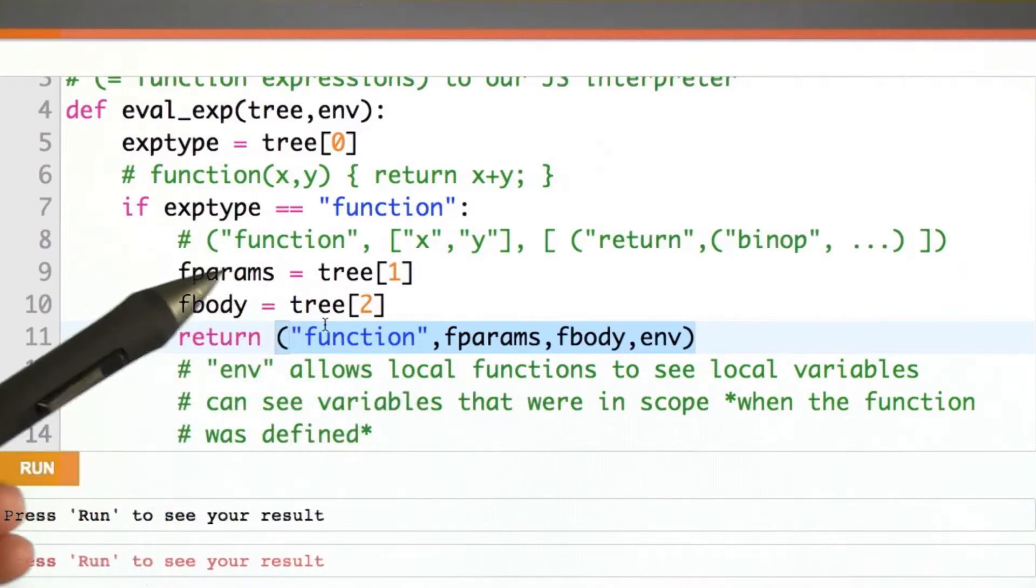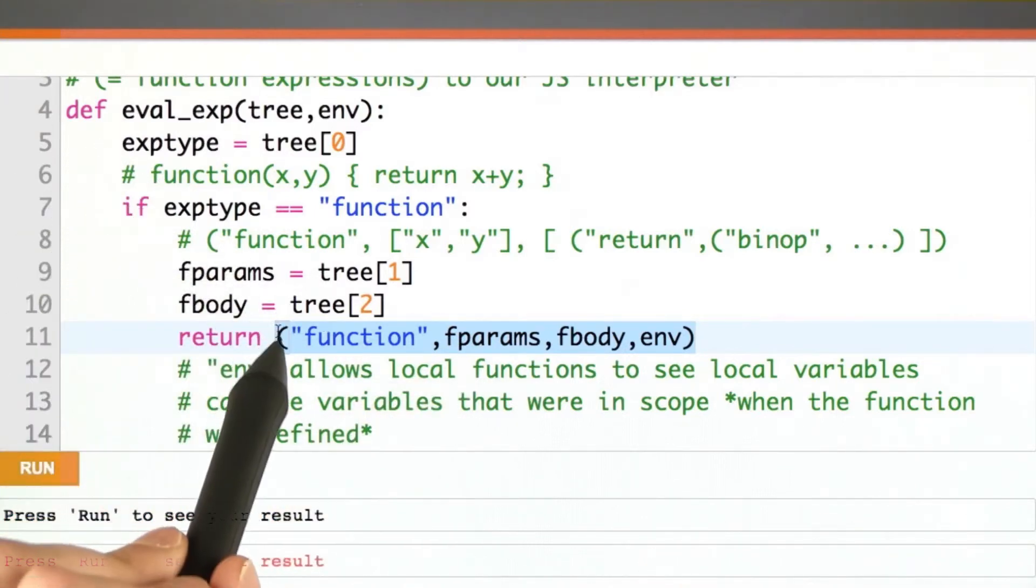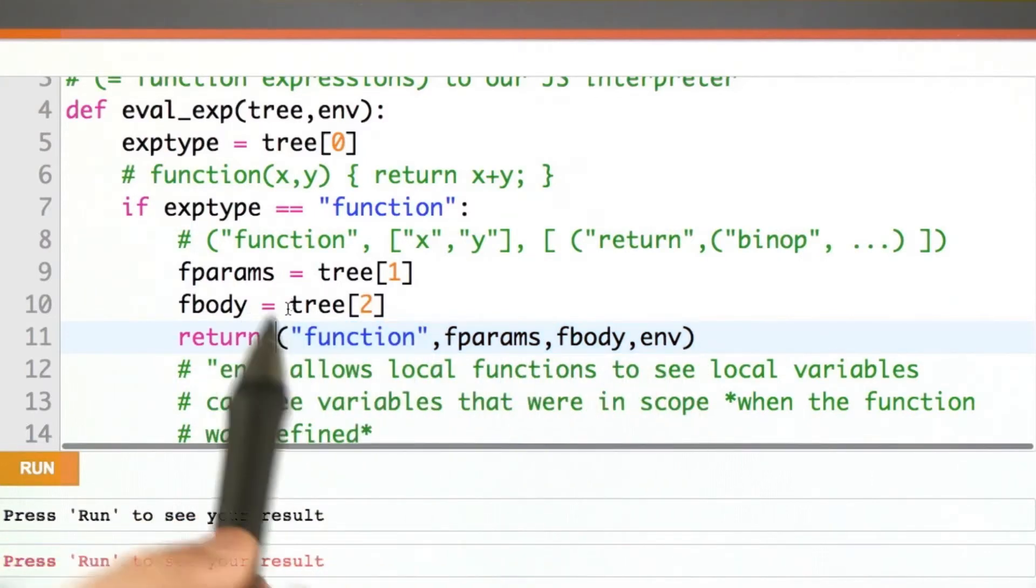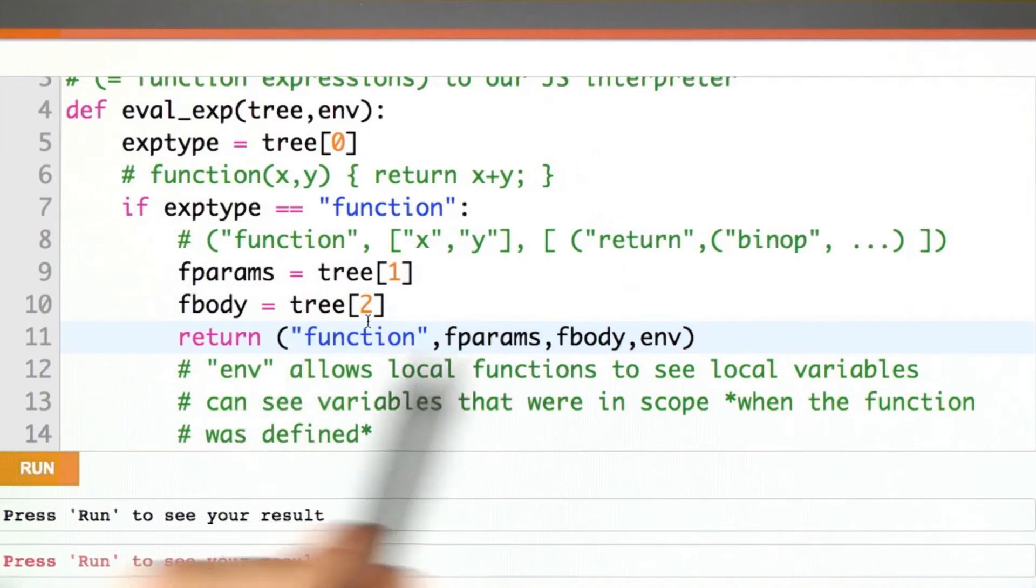For an anonymous function, we don't add it to the environment unless the user assigns it. But this code should look really familiar. We have something almost exactly like it for handling functions at the top level as JavaScript elements.